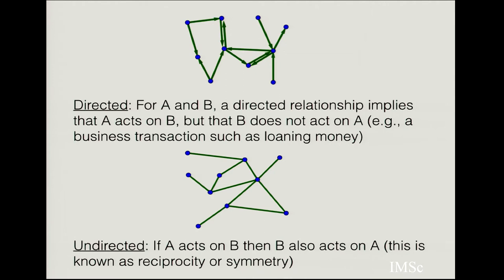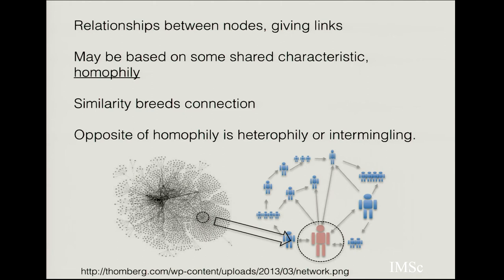You can assign links in many ways. One way is by looking for some shared characteristic between nodes — this is called homophilia: similarity breeds connection. For example, all nodes might read the same magazine on Friday, or take the same plane to work. This would be a way of linking different people within the network. The opposite of homophilia is heterophilia.